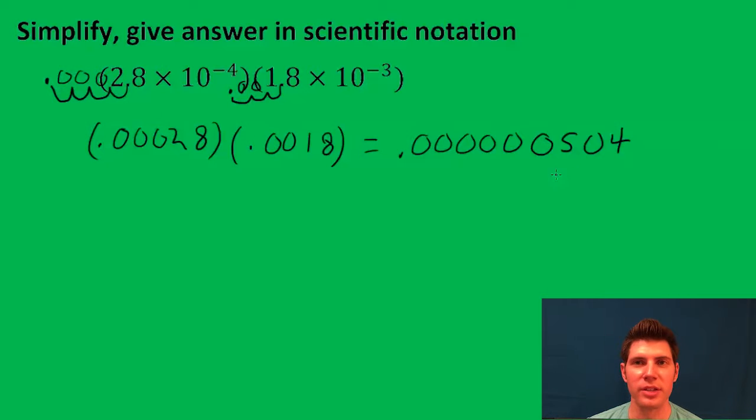Then we need to rewrite it in scientific notation. We need a number between 1 and 10, that's going to be 5.04 times 10 to the... Now the way we decide is how far do we have to move it over?